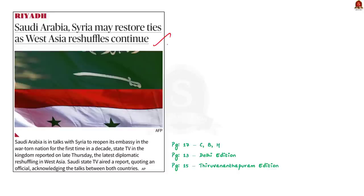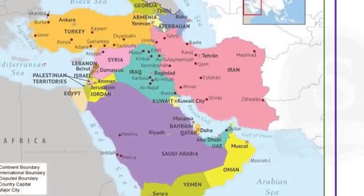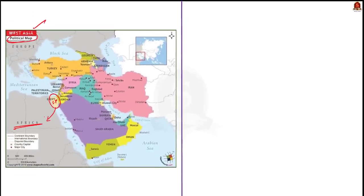This article says that Saudi Arabia is planning to reopen its embassy in Syria. We are not going to discuss the news in detail. Instead, we are going to use this opportunity to look at the Middle East map. This is the political map highlighting the countries of West Asia. Notice that Egypt's Sinai Peninsula is included as a part of West Asia, even though the country of Egypt is located in the African continent. This region is highly volatile and always in the news, so you can always expect a map-based question from this region. In our discussion today, we will mainly focus on water bodies around West Asia.